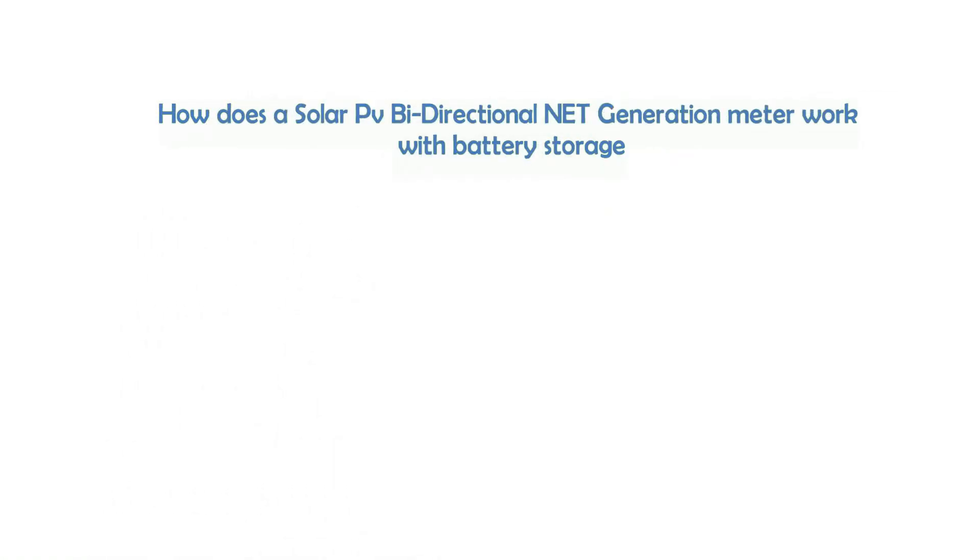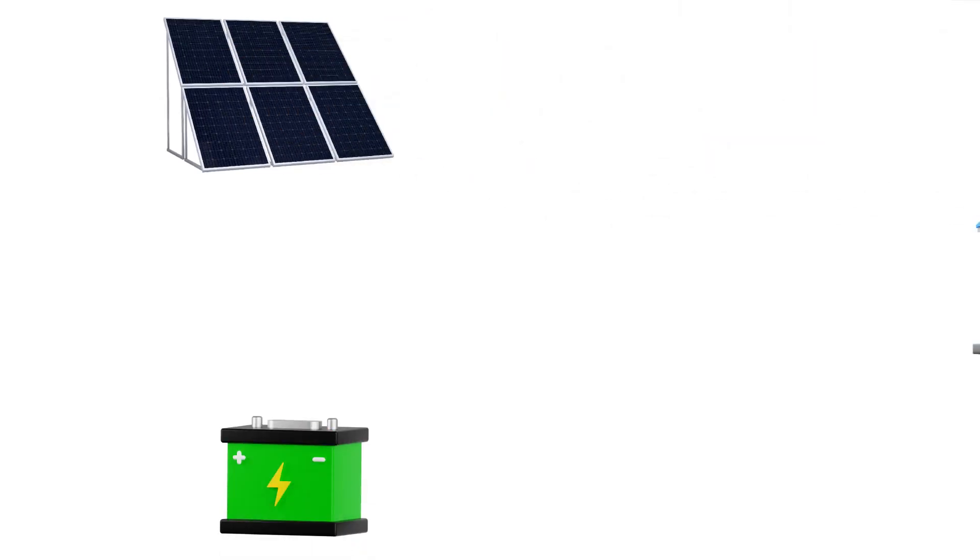How does a solar bi-directional net generation meter work with battery storage? Solar panels are connected in parallel with the DC coupled battery to the inverter.